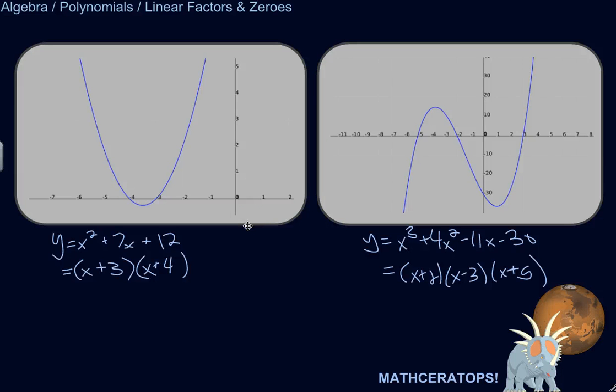Alright, so the root, or zero, of a polynomial function is where it crosses the x-axis.